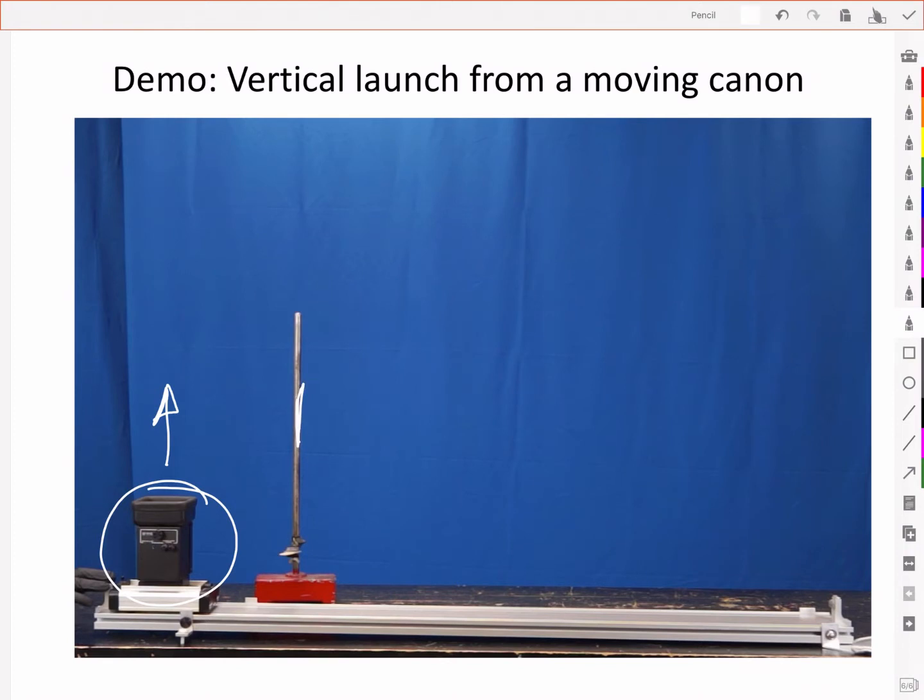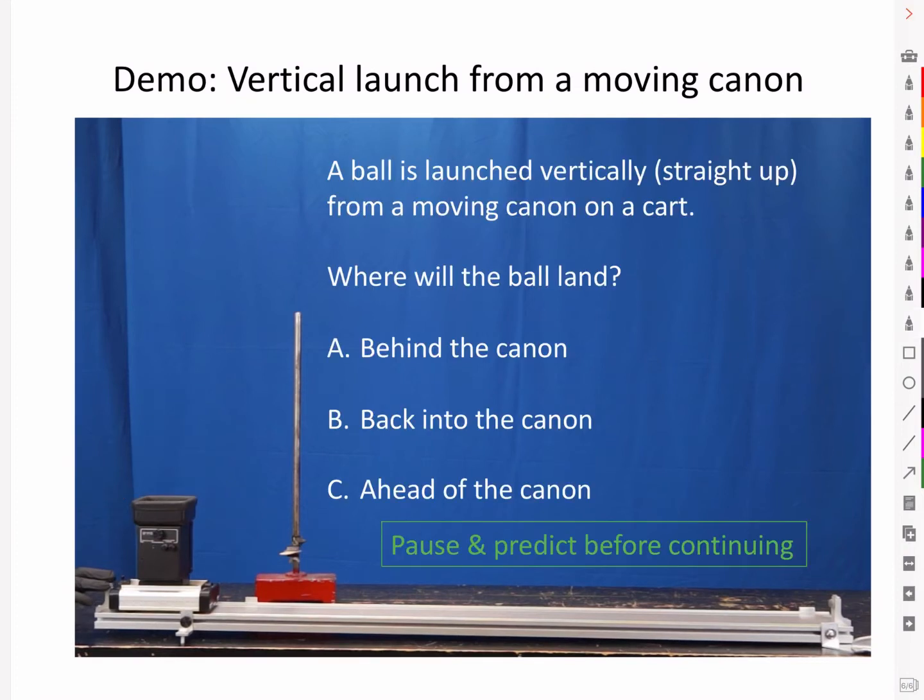The cart is released with an initial constant velocity on a low friction track, so it will continue with a near constant horizontal velocity all the way along. After the ball is launched vertically, where will the ball land?